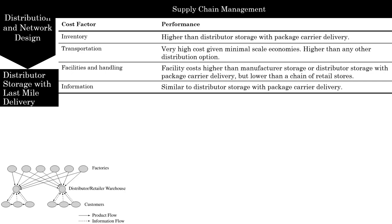In this option, facility costs are somewhat larger than for a network with retail stores, but much higher than for either manufacturer storage or distributed storage with package carrier delivery. Processing costs are much higher than for a network of retail stores because all customer participation is eliminated — a grocery store using last mile delivery performs all processing until the product is delivered to the customer's home, unlike a supermarket where the customer does more work. The information infrastructure with last mile delivery is similar to distributed storage with package carrier delivery but requires additional capacity for scheduling deliveries.